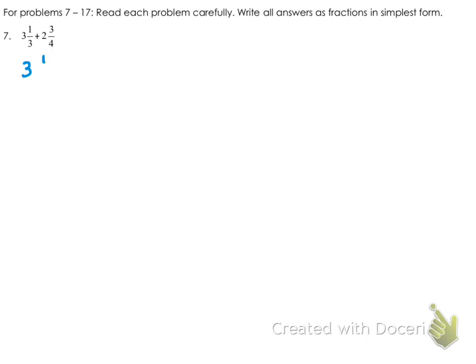So we have 3 1/3, and we are adding 2 3/4 to that. Right now we have a 3 in the denominator and a 4 in the denominator, so we need to find a common denominator. 12 is going to be our least common denominator.